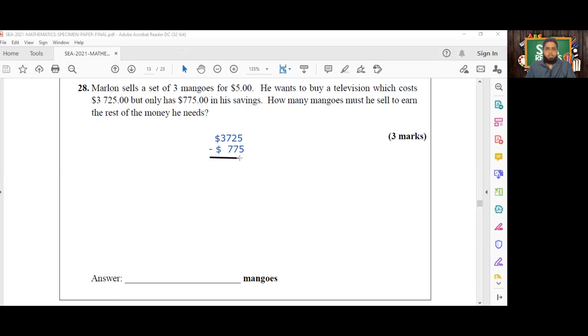So if we subtract those from each other, we will get a difference of $2,950. Therefore, Marlon needs to save $2,950. So how many mangoes would he have to sell in order to earn that type of money?